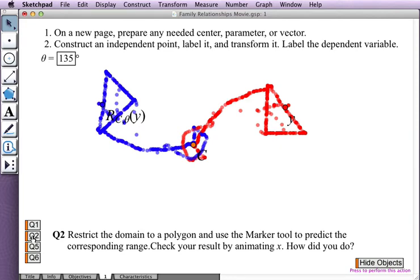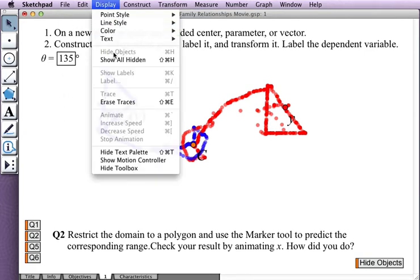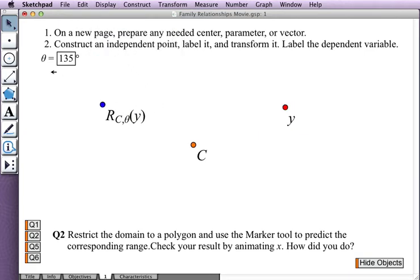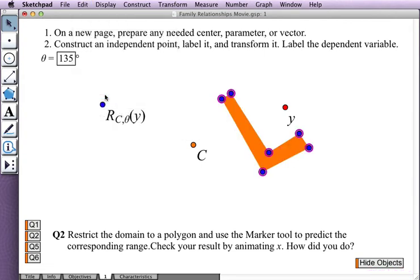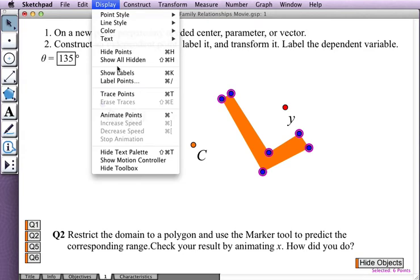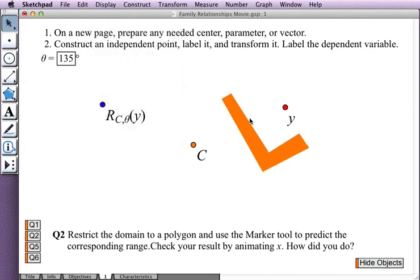The next step is to restrict the domain to a polygon. So let me erase the old traces and use the Polygon tool to create a polygon for myself. Let me make it with some sides that are at angles here that are sort of interesting angles. And I'll also select the parents of that polygon to hide them so that I don't get confused by the vertices of my polygon.